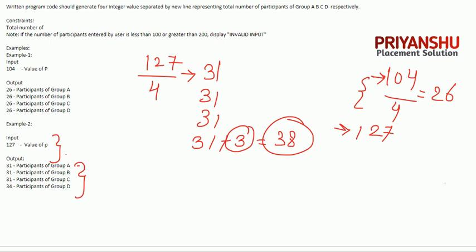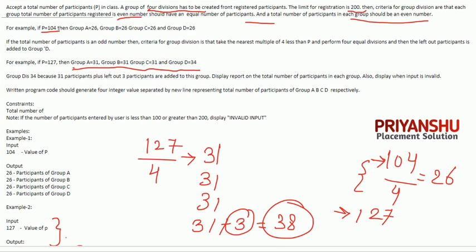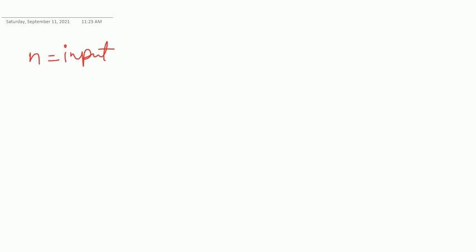Now let's discuss the solution. The constraints say: if the number is less than 100 or greater than 200, you need to print 'invalid input'. You take one input. You can make this program in any programming language. In Python, you write: n = int(input()). In C or C++, you use scanf to take input.